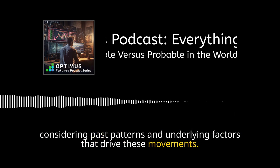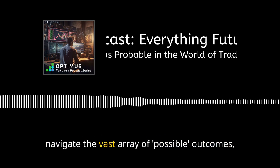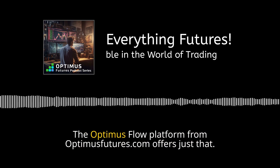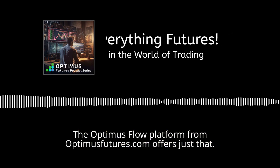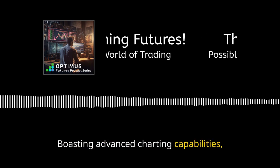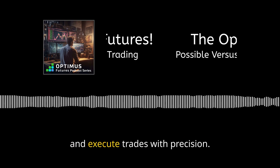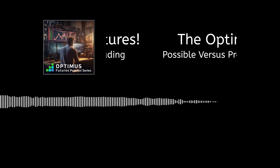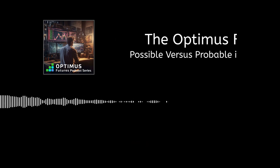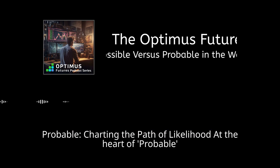The real challenge for traders is not getting ensnared in a retrospective view, but focusing on the probable — a perspective rooted in rigorous analysis considering past patterns and underlying factors. To truly harness the power of understanding the probable and navigate the vast array of possible outcomes, traders require a sophisticated and intuitive platform. The Optimist Flow platform from optimusfutures.com boasts advanced charting capabilities, empowering traders to discern patterns, analyze data, and execute trades with precision.